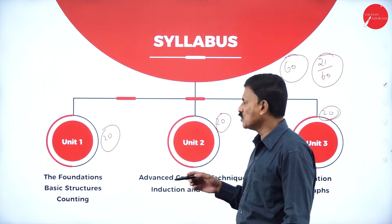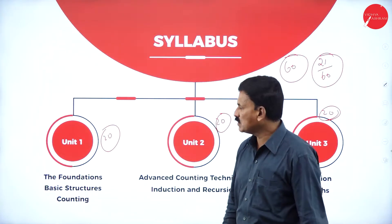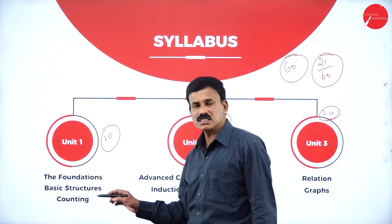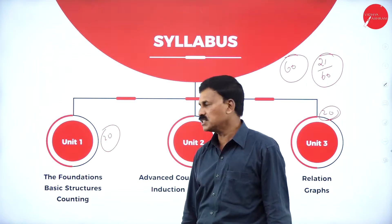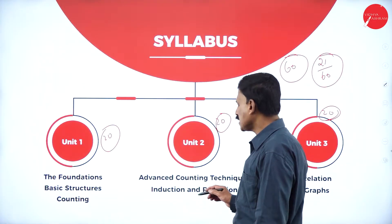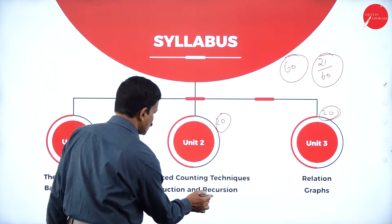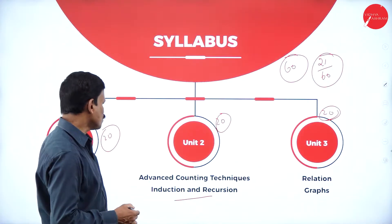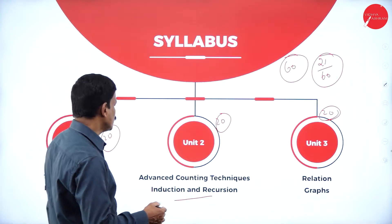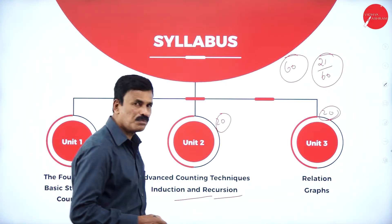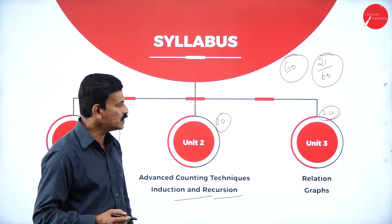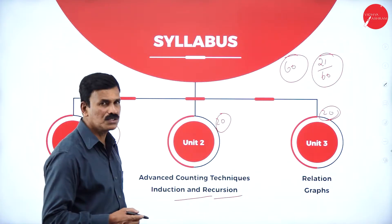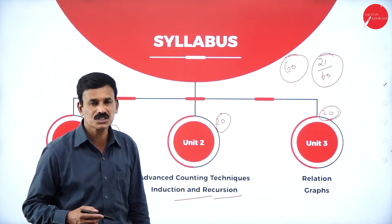This is the foundation code. The first unit covers the foundation of basic structures and counting. The second unit covers advanced counting techniques, mathematical induction, and recursion. The third unit — a very important one — covers relations and graphs. These are the three main units we are going to study in discrete mathematics.